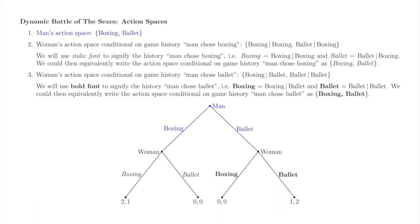The man's action space is labeled in blue, both in the list and on the tree. His sole action space consists of boxing or ballet, his two available actions. The woman has two action spaces. Let's consider the action space in blue in the list and on the tree. This action space is her action space conditional on the man selecting the action boxing.